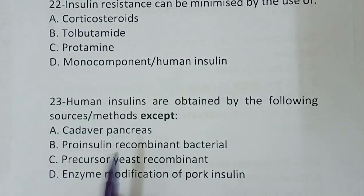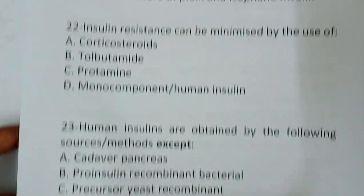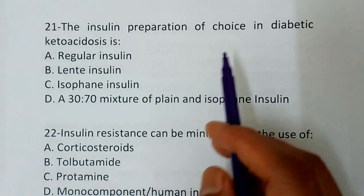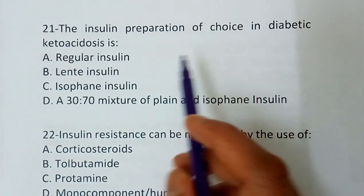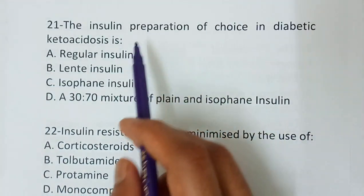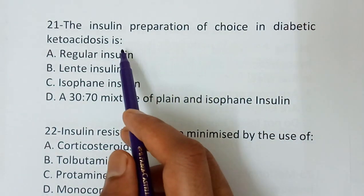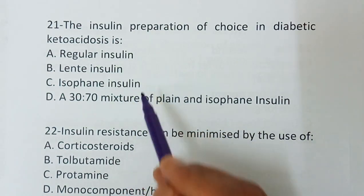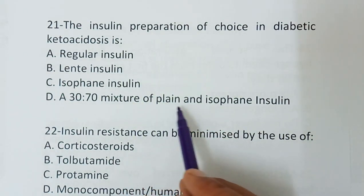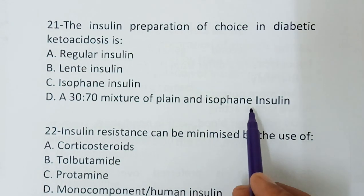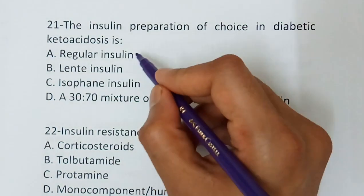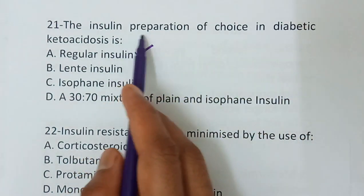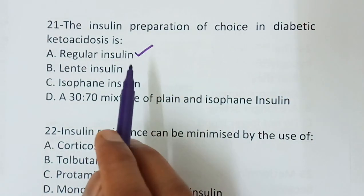Question number 21 — the insulin preparation of choice in diabetic ketoacidosis is: option A, regular insulin; option B, lente insulin; option C, isophane insulin; option D, 30 to 70 mixture of plain and isophane insulin. The correct answer is option A — regular insulin. In case of diabetic ketoacidosis, the insulin preparation of choice is regular insulin.